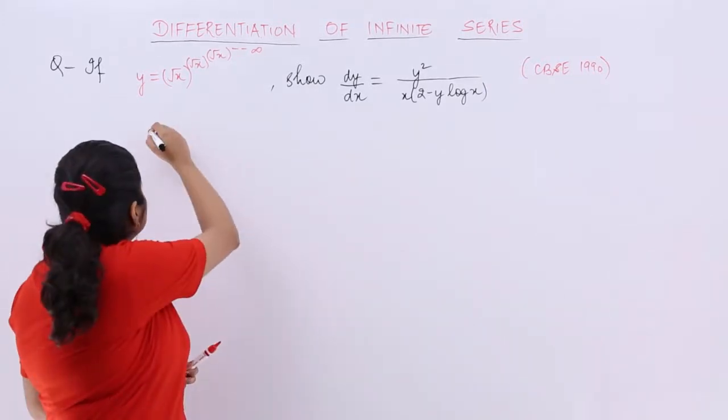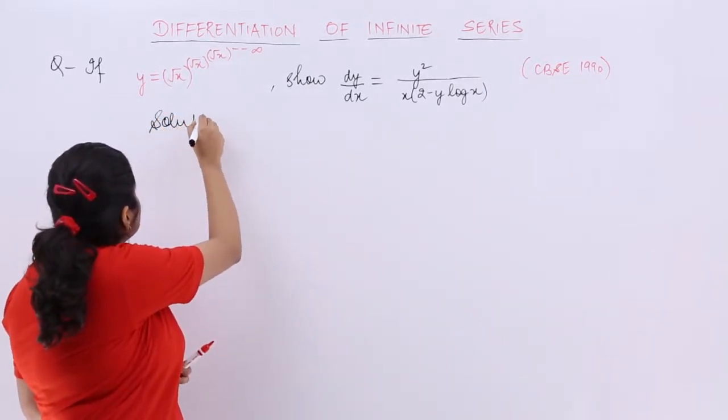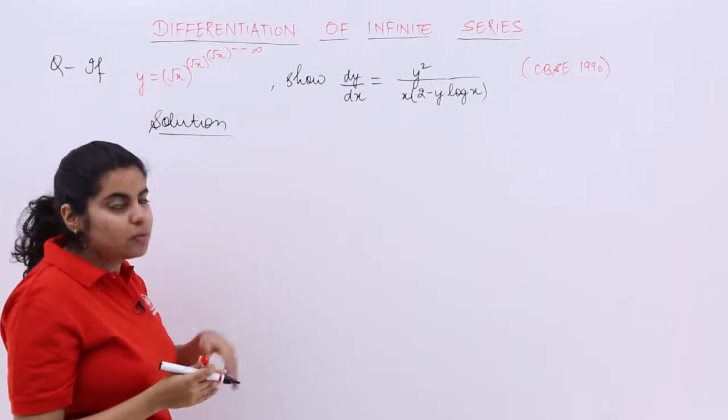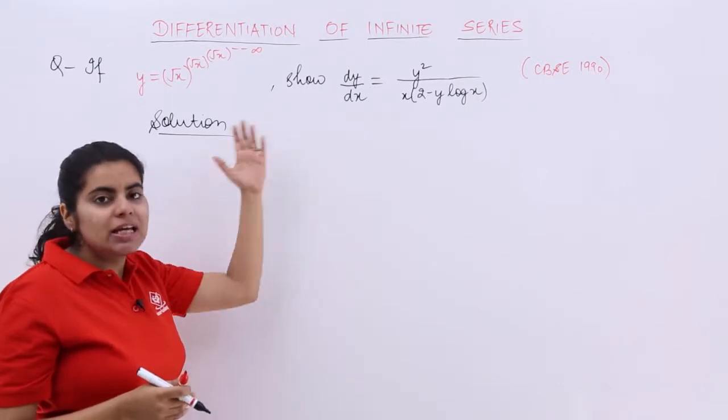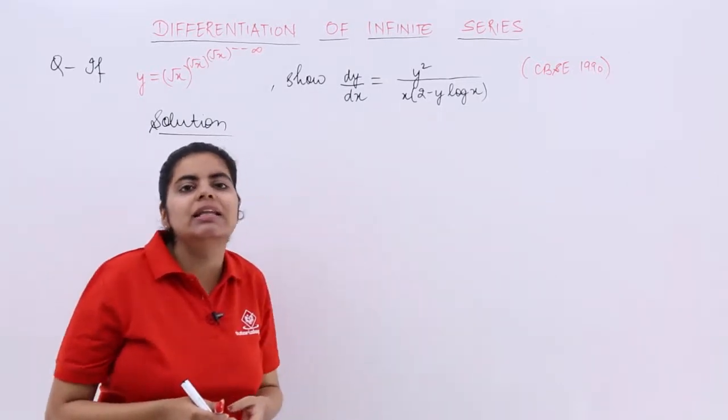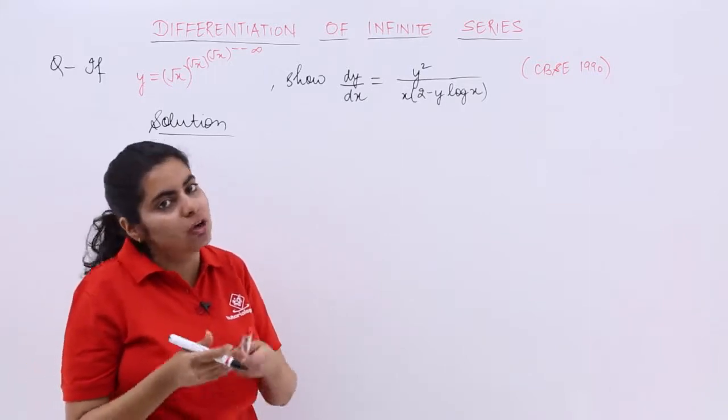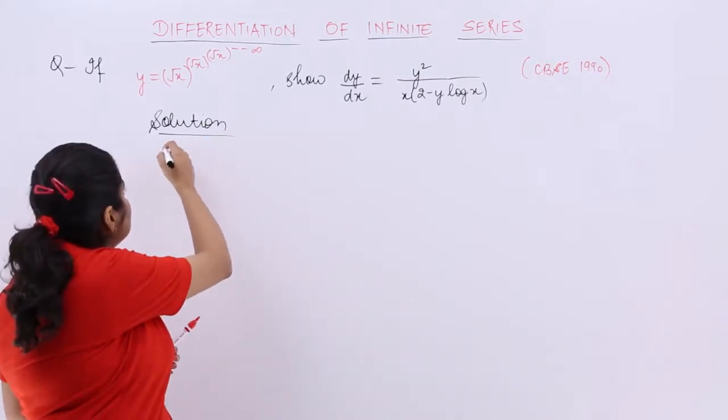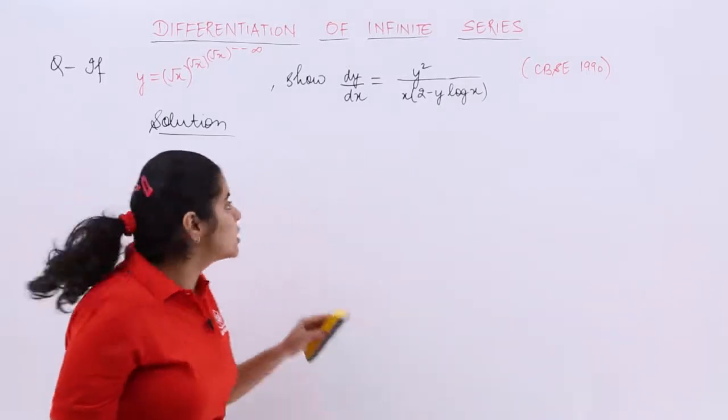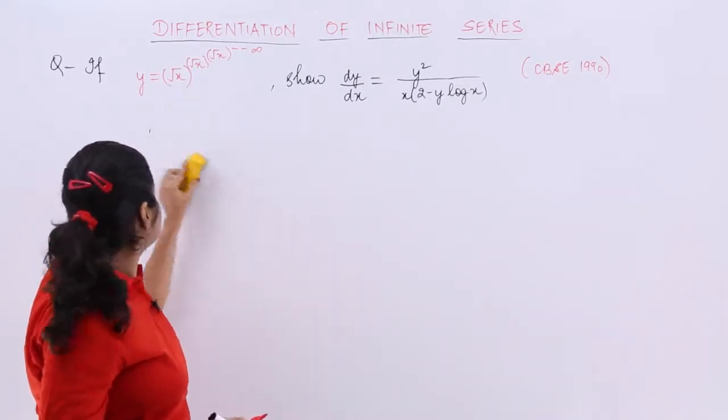I write the heading as solution and now I read the question. It says if y is equal to root x raised to the power root x raised to the power root x, it goes on till infinity. Show that dy by dx is something like this. Means it is a proof question or a solution based question. You can write the heading as solution or if you wish to, you can make this heading as proof. So let's write it as proof basically. It becomes more relevant in context of show that or verify.